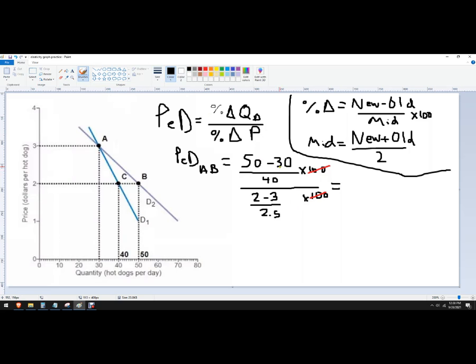So, 50 minus 30 over 40 is just 20 over 40. So that's 50% or 0.5, either one doesn't matter.